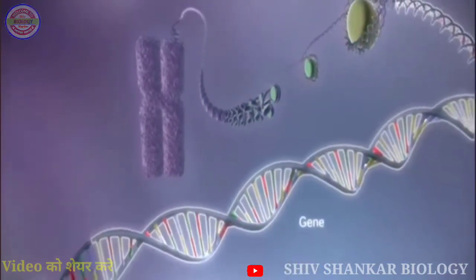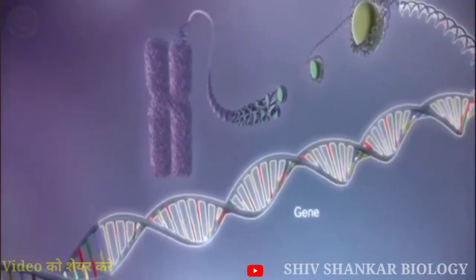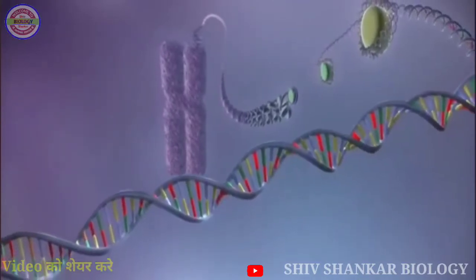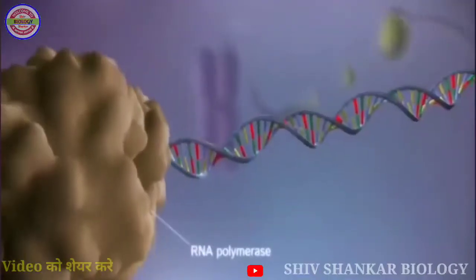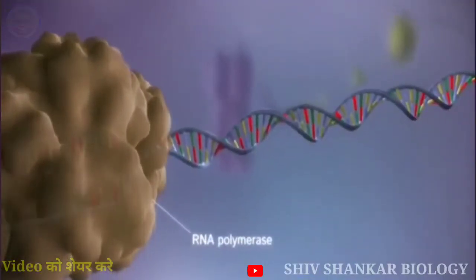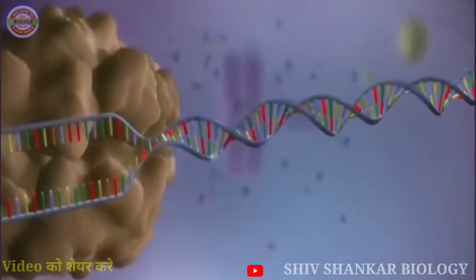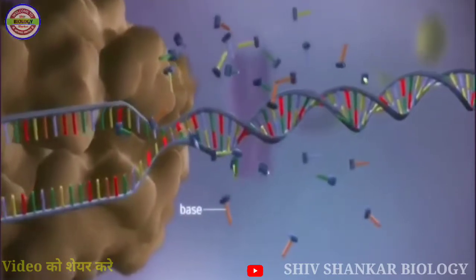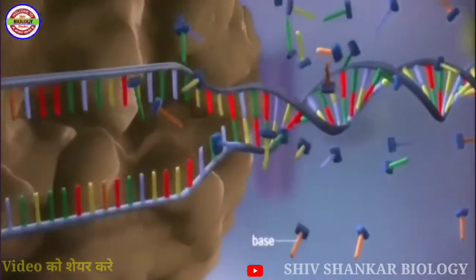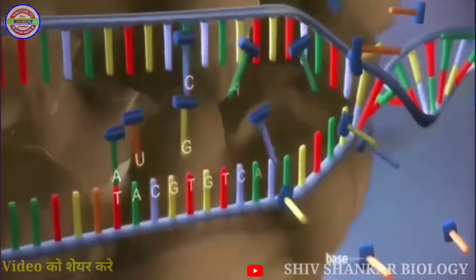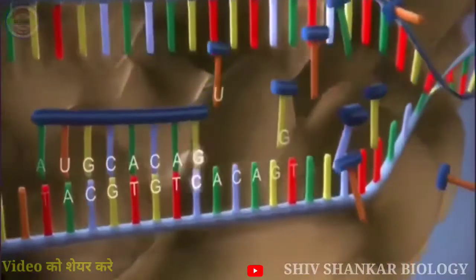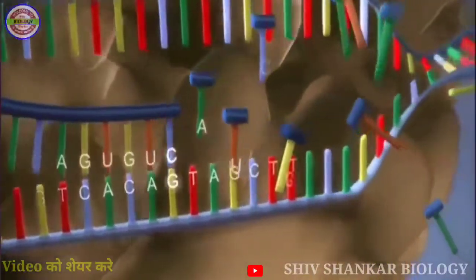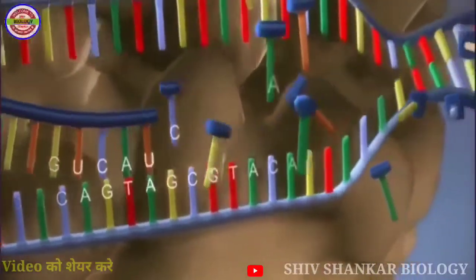Within the DNA are sections called genes. These genes contain the instructions for making proteins. When a gene is switched on, an enzyme called RNA polymerase attaches to the start of the gene. It moves along the DNA, making a strand of messenger RNA out of free bases in the nucleus.